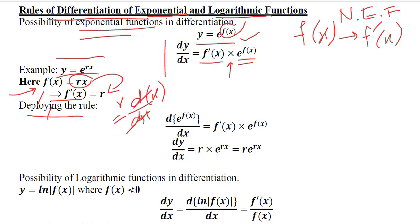The rule says we need to write the derivative we calculated and write the function in its original form. The overline and underline guide us about the substitution. We multiply the two terms and get the derivative of the natural exponential function.